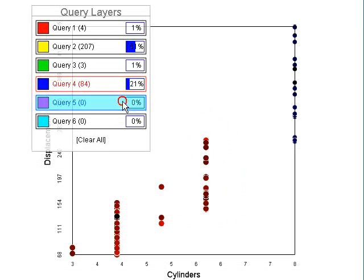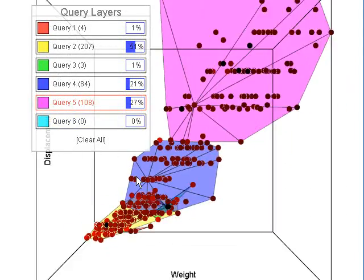ScatterDyze allows the user to build queries using the query layer box and a lasso tool, and then see how the query is distributed in other plots.